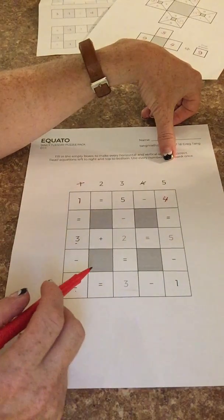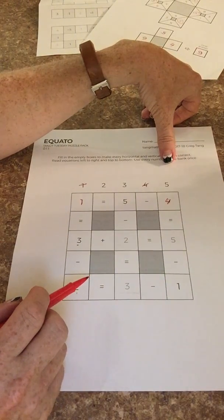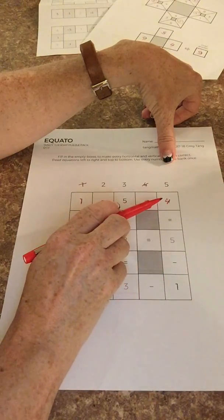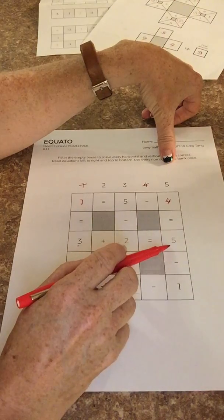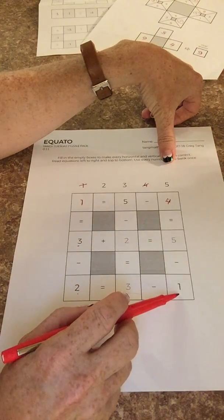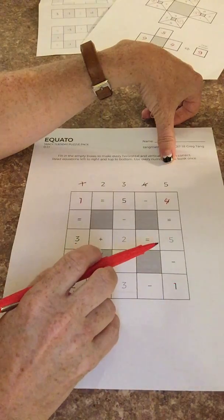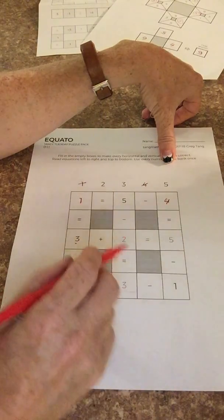So now this column would say, if the answers weren't already filled in, four equals what number minus one. So we're trying to think of what number is one more than four or they can do four plus one to solve it and it would be five. Four equals five minus one.